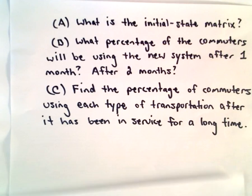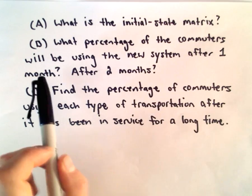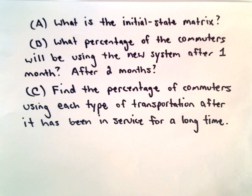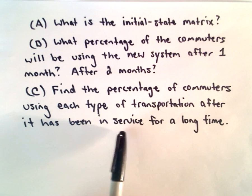We're going to answer the following three questions. First we're going to figure out what's the initial state matrix, then what percentage of commuters will be using the new system after one month and after two months, and finally we're going to find the percentage of commuters using each type of transportation after it's been in service for a long time.